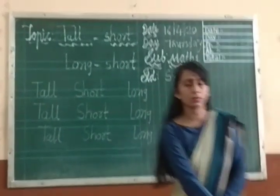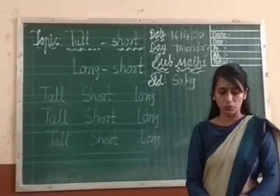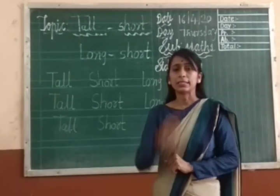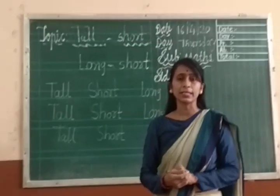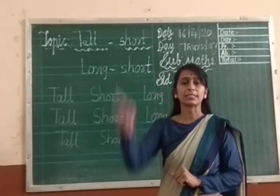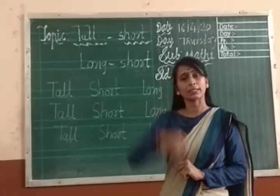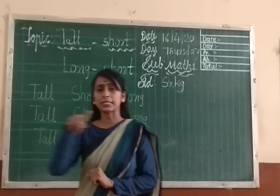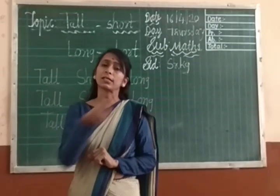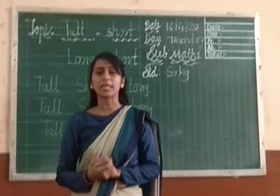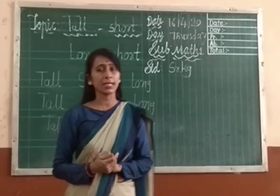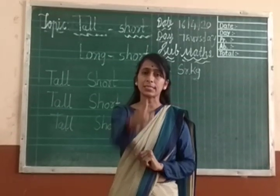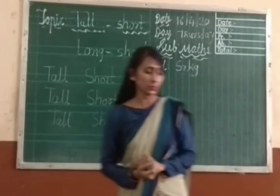Okay. Now, in the senior KG student's worksheet, tick the long object and circle the short object. Understand? Tick the long object and circle the short object. Understand? Okay. Keep practicing. Happy learning. Thank you.